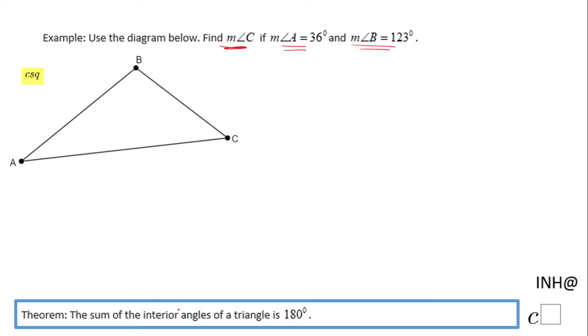Over here we have a theorem that says the sum of the interior angles of a triangle is 180°. So basically we're going to say measure of angle A plus measure of angle B plus measure of angle C equals 180°.